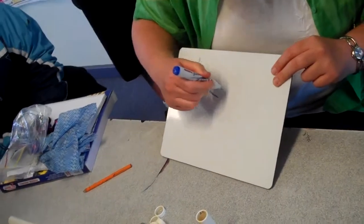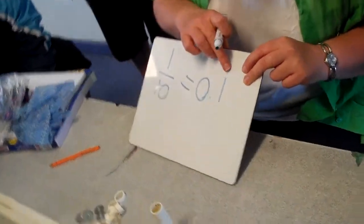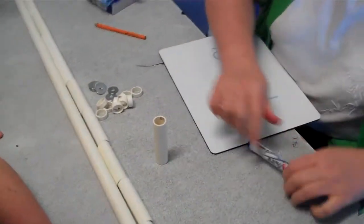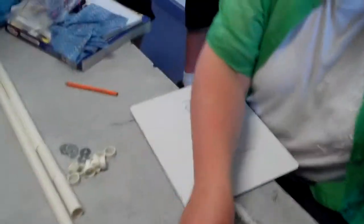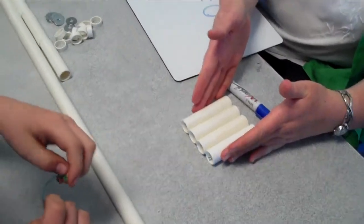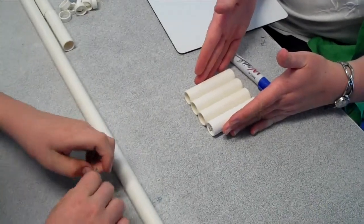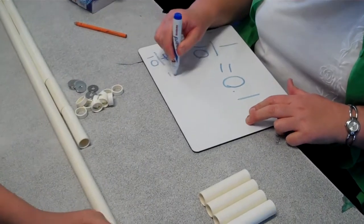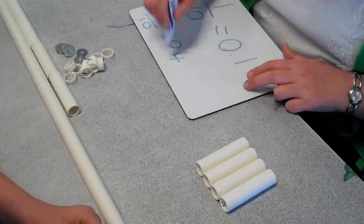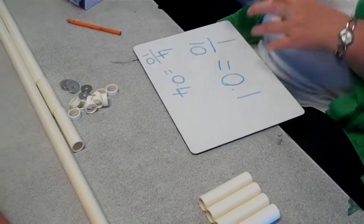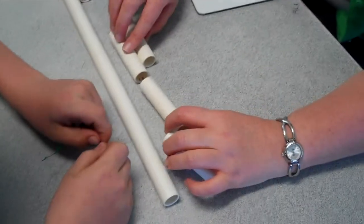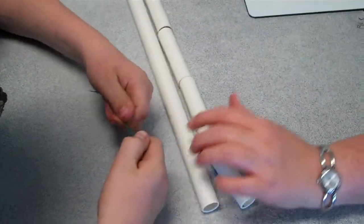This is one tenth, and how do I write that as a decimal? Zero point one — 0.1 — this means one tenth. So if I had this, how much is that worth? Four tenths, or 0.4. Four tenths, yep.